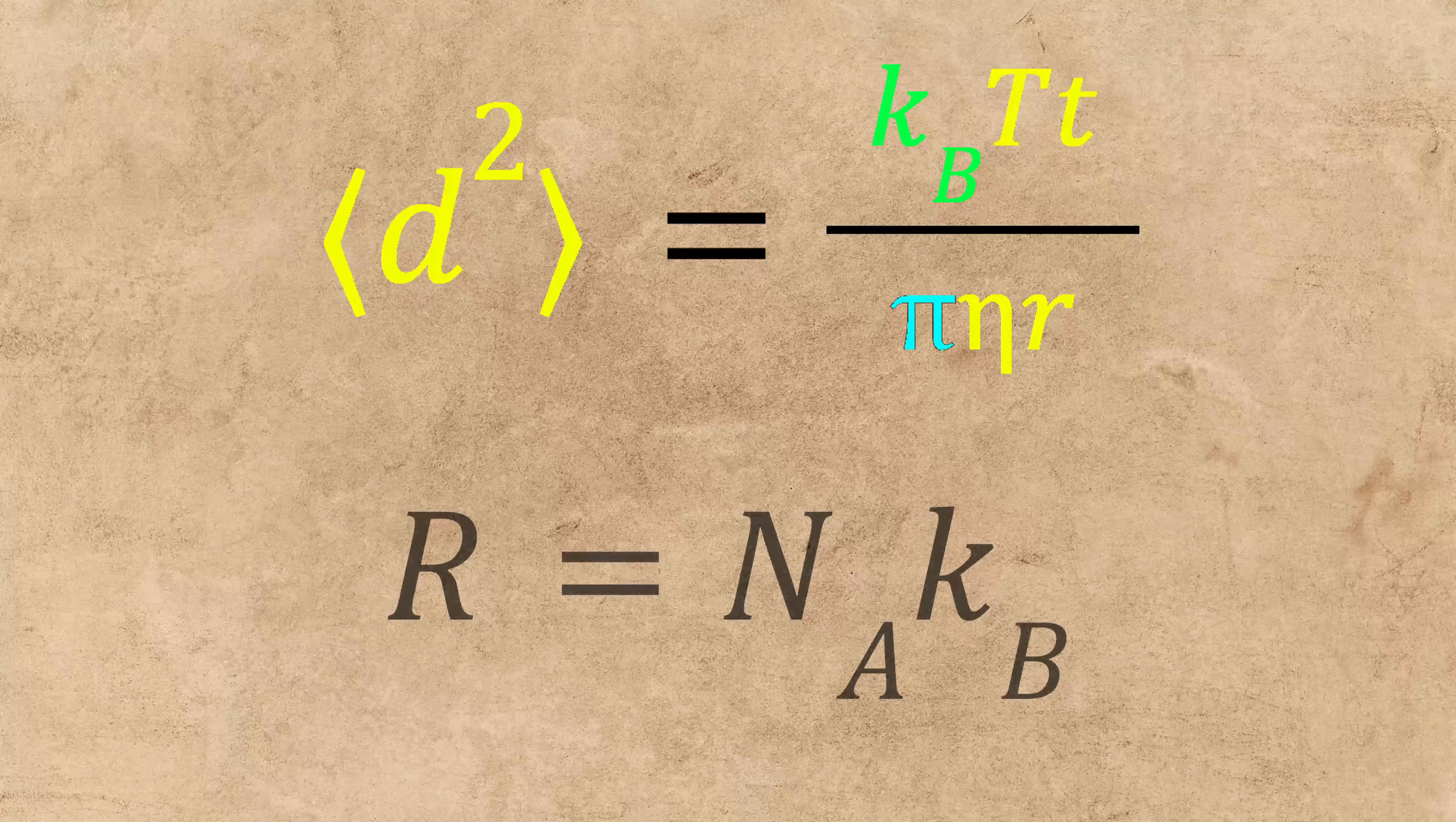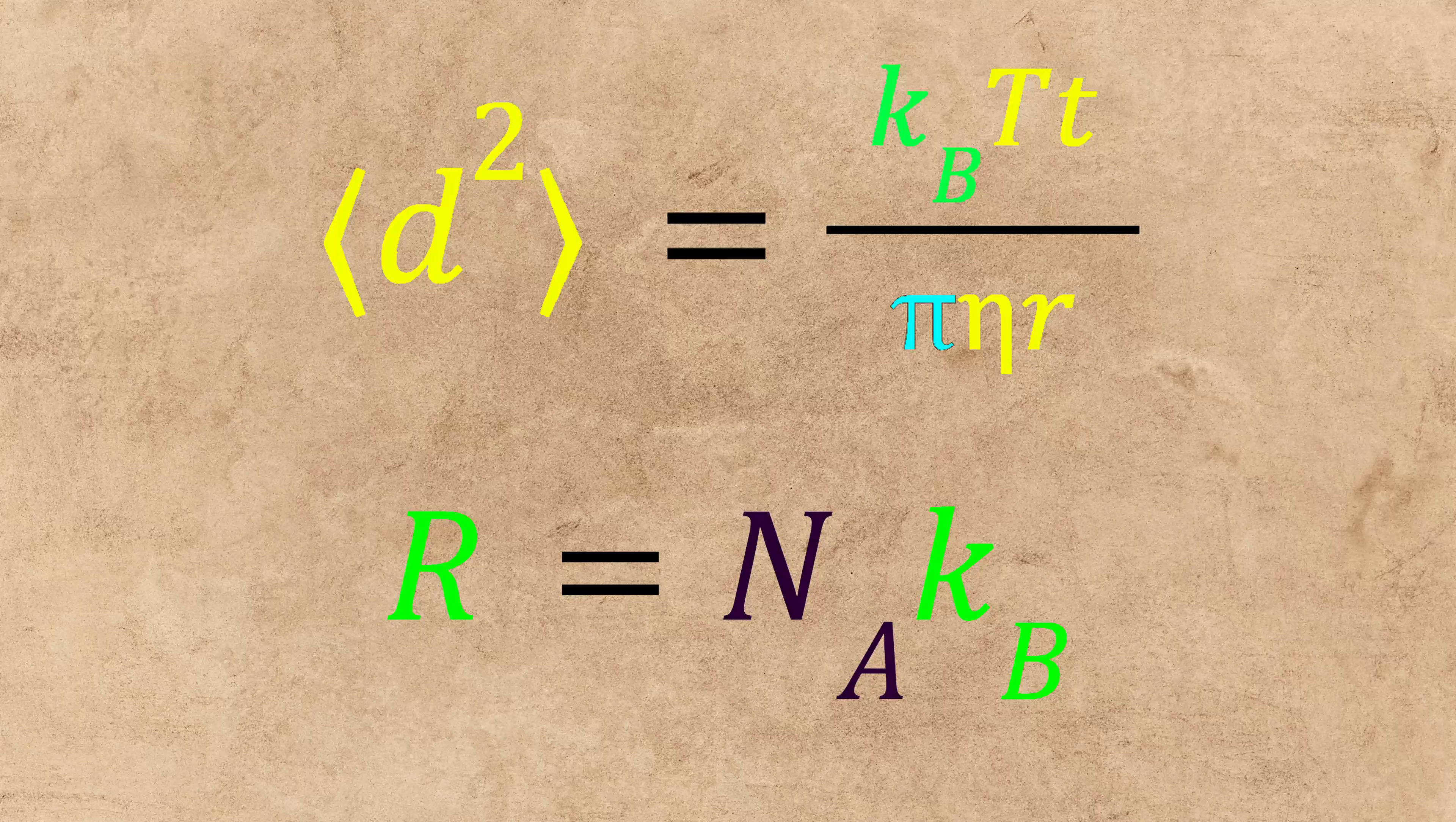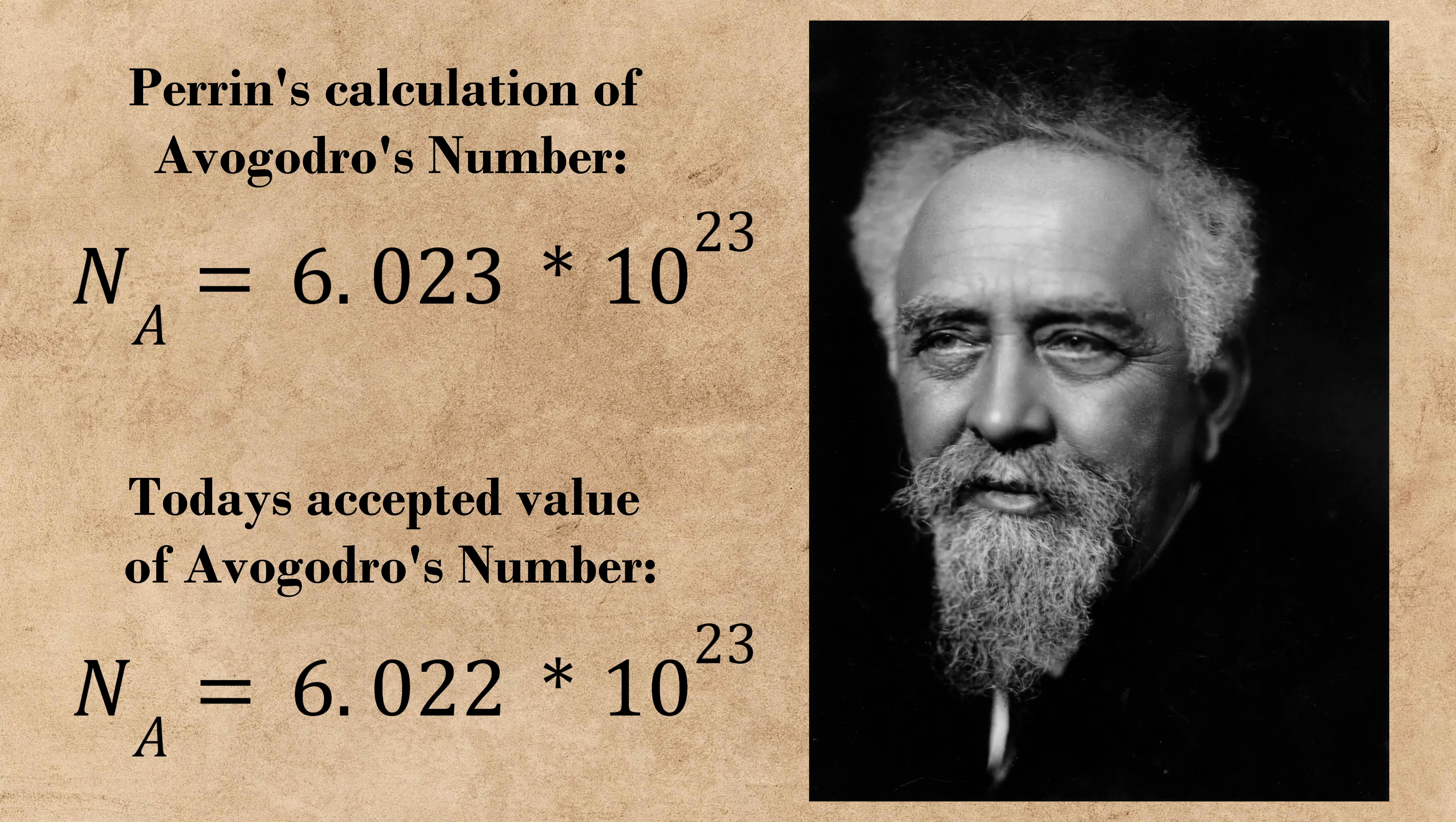He then took the definition for the ideal gas constant, using the previously known values for the constant itself and the now-calculated Boltzmann constant, and solved for Avogadro's number. Using this method, along with others, Perrin arrived at a value of Avogadro's number of 6.023 × 10²³ particles per mole, a value still extremely close to today's accepted value.